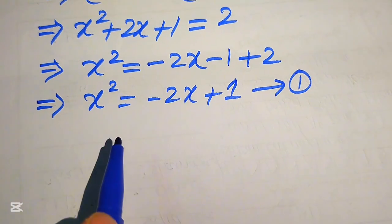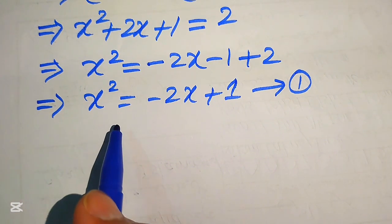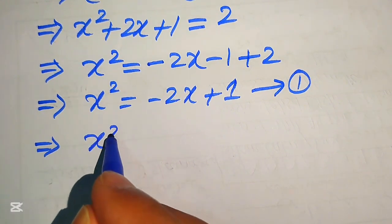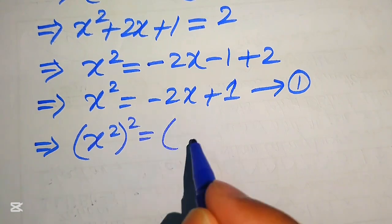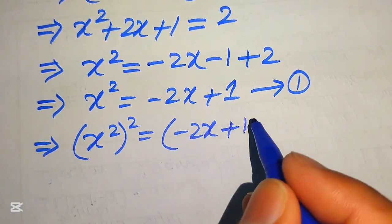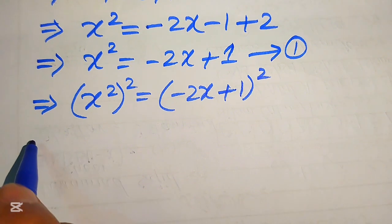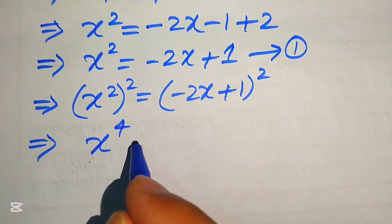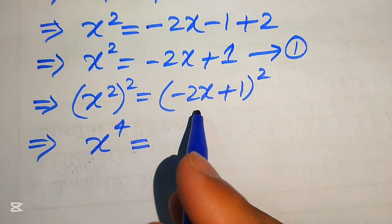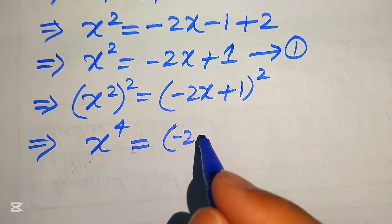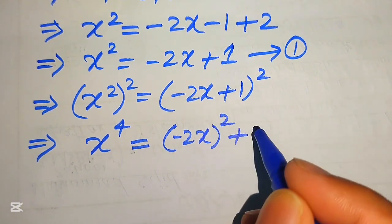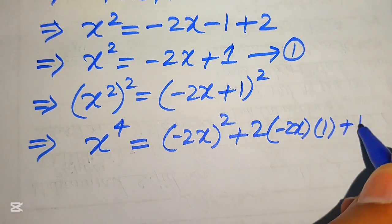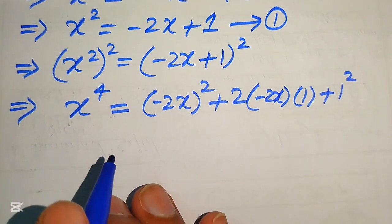To find x to the power of 8, we first find x to the power of 4 by squaring both sides of Equation 1. Squaring gives x to the power of 4 equals the square root of minus 2x plus 1 whole square. Applying the algebraic formula (a plus b) whole square, we get: minus 2x whole square plus 2 times of minus 2x into 1 plus 1 squared.